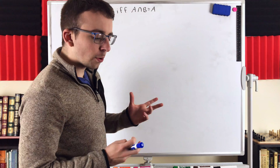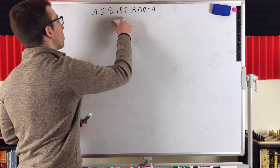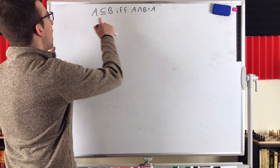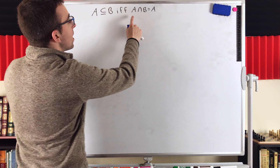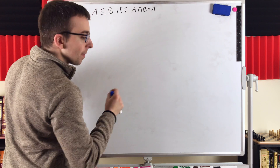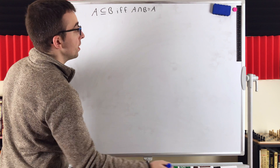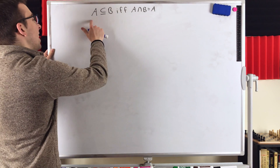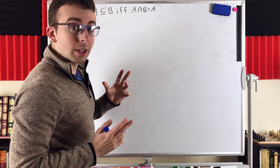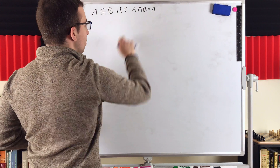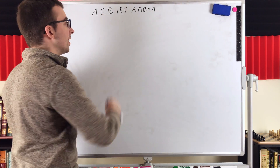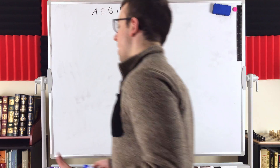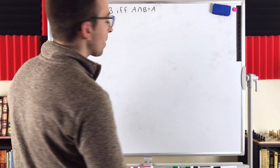The first thing to notice is that this is an if and only if, or biconditional statement. So we've got to show that if A is a subset of B, then A intersect B is equal to A. Then we need to show the other direction: that if A intersect B is equal to A, then A is a subset of B. So given either piece of information about two sets, we can conclude that the other piece is true. That is the beauty and the power of a biconditional theorem.